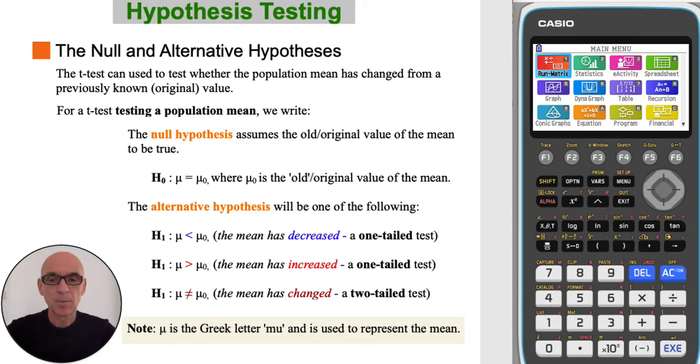When testing a population mean, the null hypothesis, H0, assumes the original value of the mean to be true. And the alternative hypothesis, H1, will either be that the mean has decreased (a one-tailed test), or that the population mean has increased (again, a one-tailed test), or that the population mean has changed (a two-tailed test).